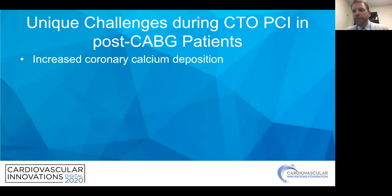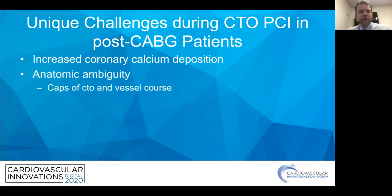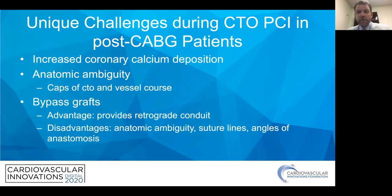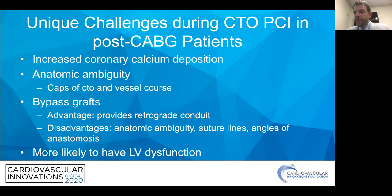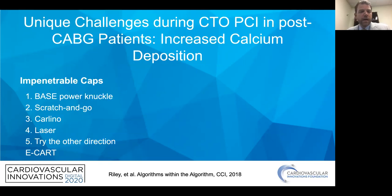Here are some unique problems we routinely encounter in post-CABG patients during CTO-PCI. We see increased coronary calcium deposition — something about a pericardiotomy leads to increased coronary calcification that makes it really tough to get through these lesions. There's also anatomic ambiguity from coronary calcium and from actual change of vessel course from tenting or kinking from bypass grafts exerting force and lifting vessels up. This leads to cap ambiguity and ambiguity about the vessel course. Additionally, bypass grafts create suture lines that can be tough to cross, the anastomosis angle doesn't always allow retrograde access, and we're more likely to have LV dysfunction.